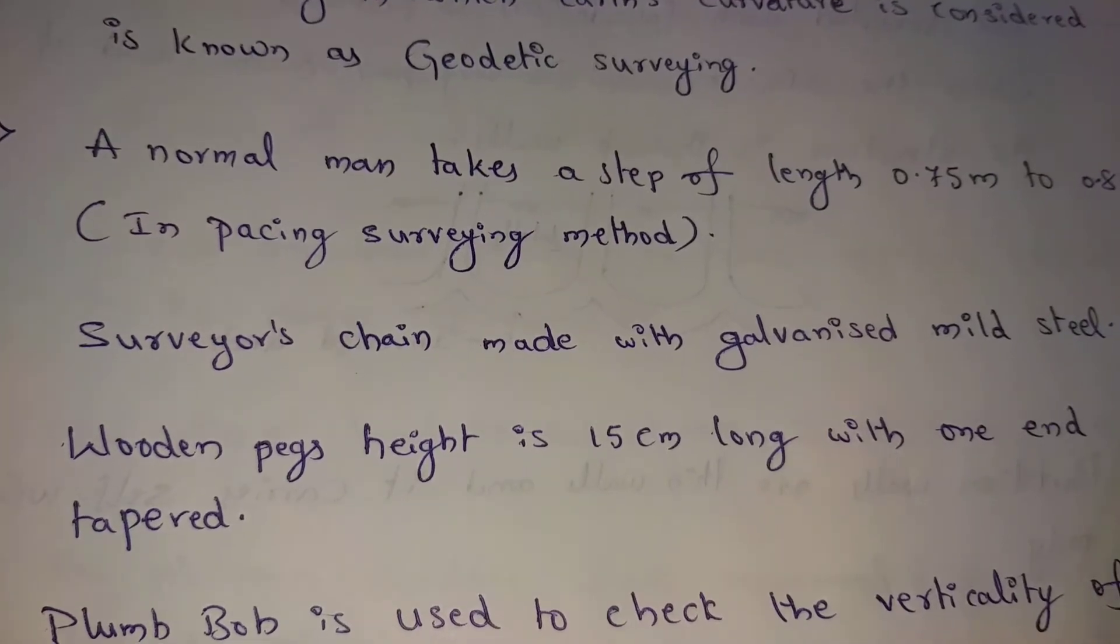Wooden pegs height is 15cm long with one end tapered. This wooden pegs we use in surveyors chain ending point. Length is 15cm. Bottom end wooden pegs are tapered, sharp, so we will fix the ground using this tapered section.